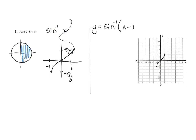Now let's graph y equals inverse sine of x minus two. We've been translating functions all year, so you can probably guess this is just going to shift right two units. Take all those points, shift them right two, and draw the same curve — there it is.